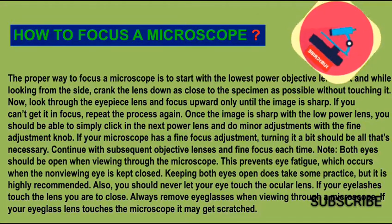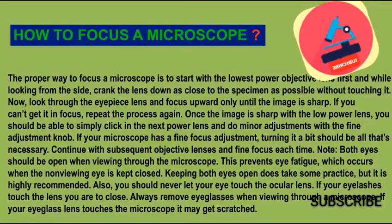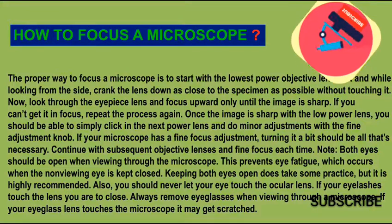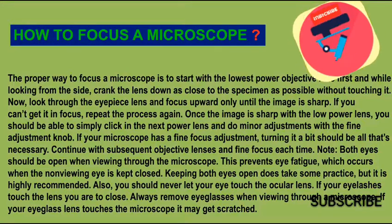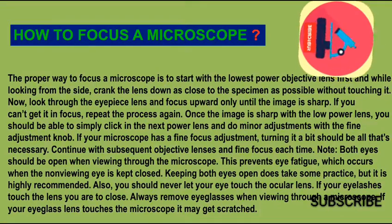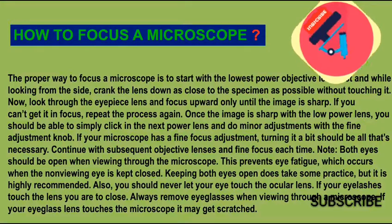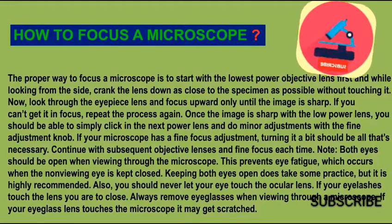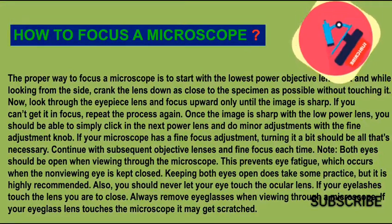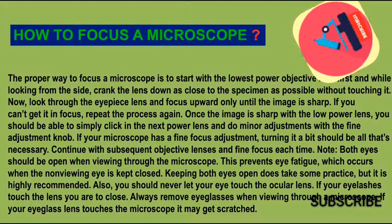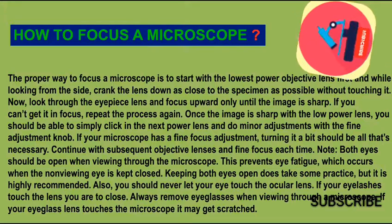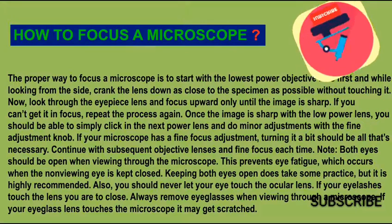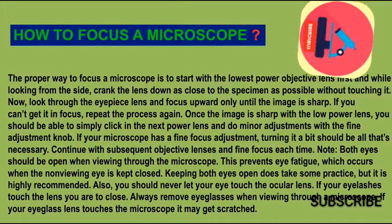To focus the microscope properly, start with the lowest power objective lens first. While looking from the side, crank the lens down as close to the specimen as possible without touching it. Then look through the eyepiece lens and focus upward only until the image is sharp. If you can't get it in focus, repeat the process. Once the image is sharp with the low power lens, simply click in the next power lens and make minor adjustments with the fine adjustment knob. Continue with subsequent objective lenses and fine focus each time.